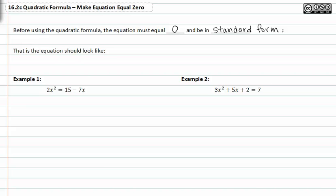So this is what the equation should look like: ax squared plus bx plus c is equal to zero. Notice that my exponents are in descending order with the number being in the last position in this trinomial.